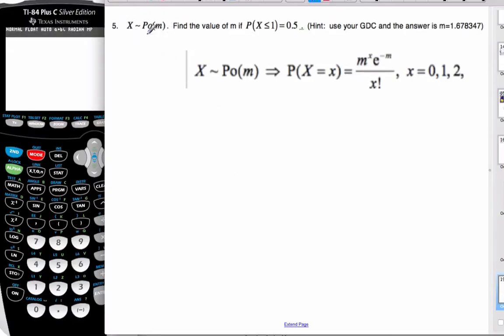So we're given a Poisson variable, random variable of x, and we find the value of m if the probability x is less than or equal to 0.5.